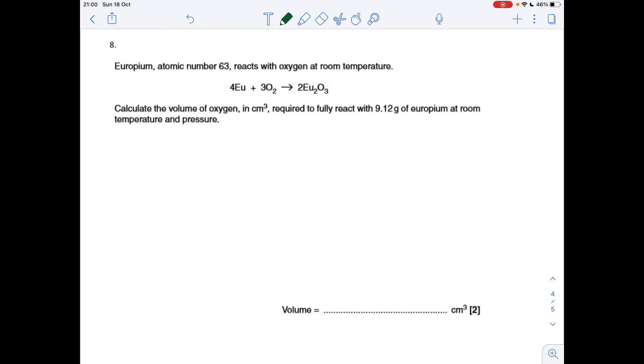The final question: another reactant volume at RTP question. Again, it wants it in cm cubed. None of the questions on this have asked for the volume to be in decimeters cubed. We've got 9.12 grams of europium. Moles of europium first, mass over MR, 9.12 divided by 152, that's 0.06 moles.